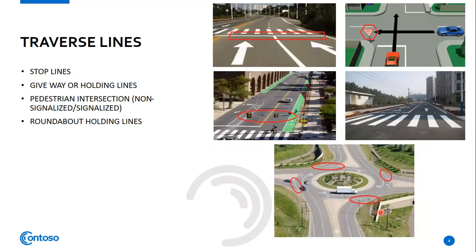Next are the transverse lines. Under transverse lines we have stop lines, give way or holding lines, pedestrian intersections (signalized or non-signalized), and roundabout holding lines. Stop lines are mostly found at crossings and before pedestrian crossings — vehicles are required to stop before the white line, meaning vehicles should stop before the zebra line or pedestrian crossing.